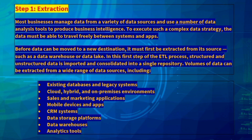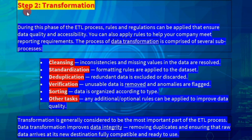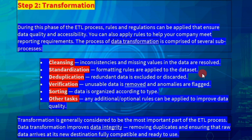The second step of the ETL process is Transformation. During this phase, rules and regulations can be applied that ensure data quality and accessibility. You can also apply rules to help your company meet reporting requirements. The process of data transformation is comprised of several sub-processes. In this phase, we can modify the data.